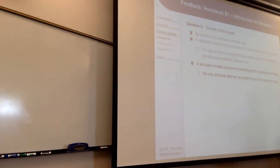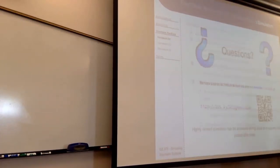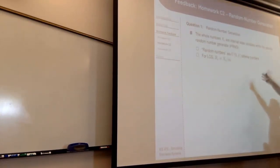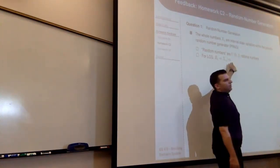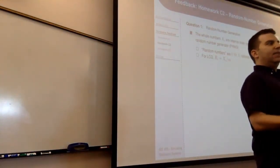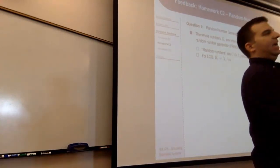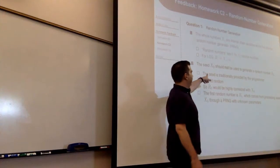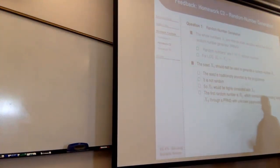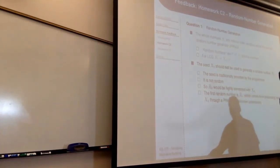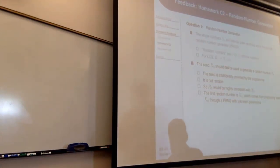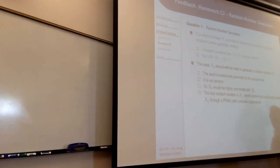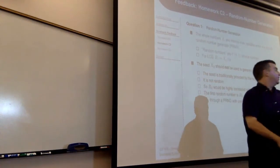For the quantitative homework feedback: when generating random number sequences using the LCG, always remember to divide by the modulus. Many people generate the internal five-digit number but forget to divide by 100,000 or whatever the modulus is to get a value between 0 and 1. Also, if I give you a seed and ask for five random numbers, the first random number should come from processing the seed — not be the seed itself. The seed is known, so it's not truly random; the first random number is the output of applying the LCG formula once to the seed.